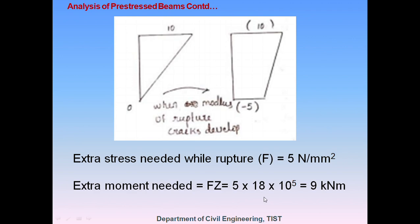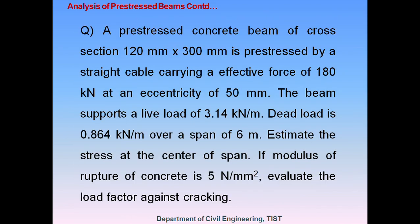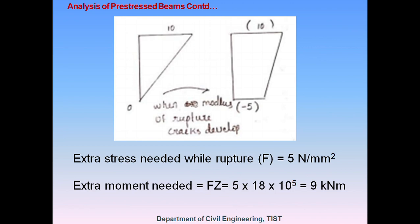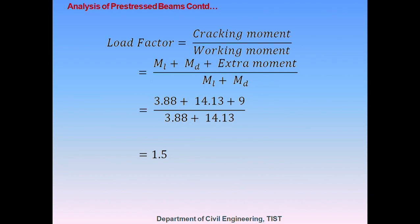Using Fz with F = 5 N/mm² and the known value of Z, we can calculate the extra moment needed for rupture. The load factor equals cracking moment divided by working moment. The working moment is ML + MD, but the cracking moment is ML + MD plus the additional moment, which equals 9 kNm. Therefore, the load factor is 1.5.